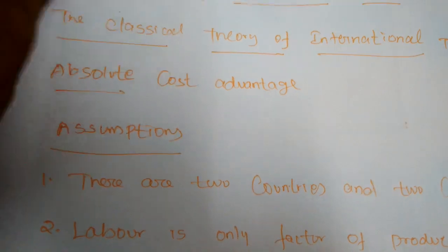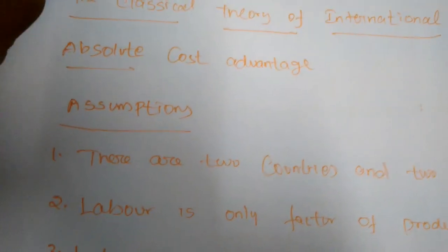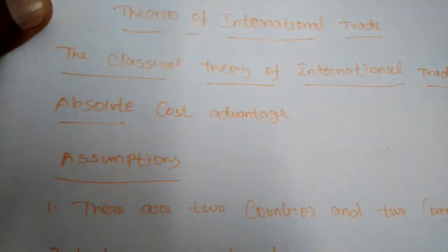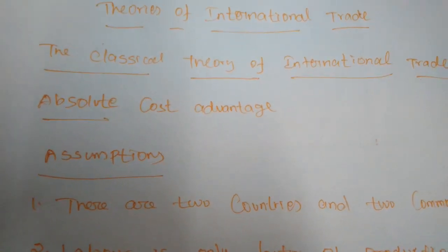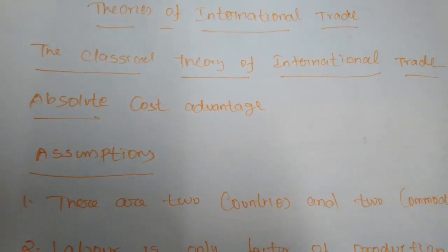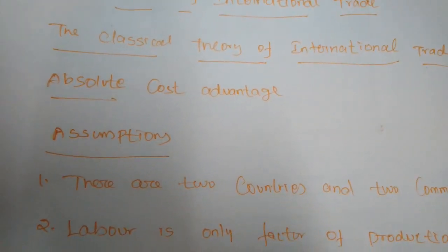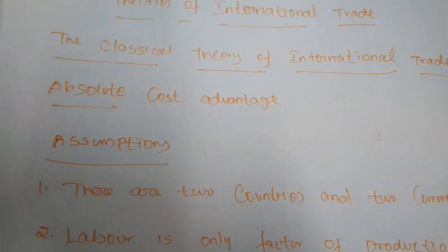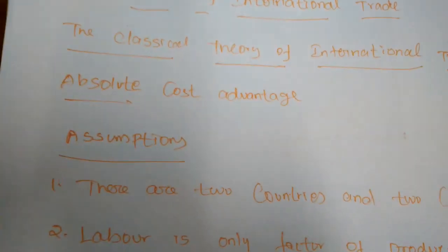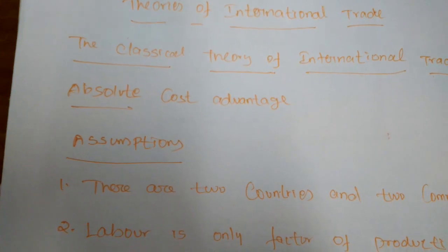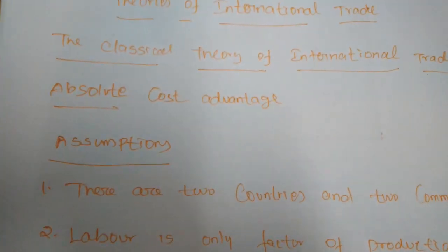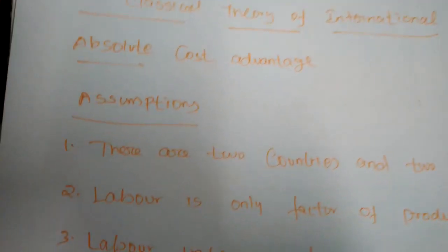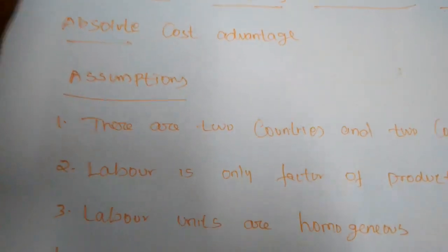In the classical theory of international trade, there are two types of cost advantages: absolute cost advantage and comparative cost advantage. The first is the classical theory of absolute cost advantage.